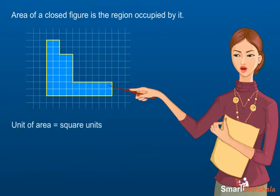The area of a square of side 1 unit is square unit. The units of area can be square centimeter, square meter, square kilometer and so on.